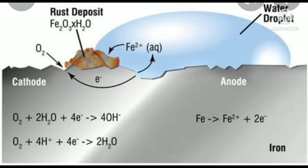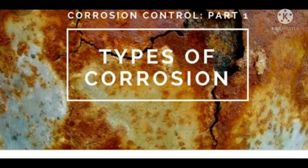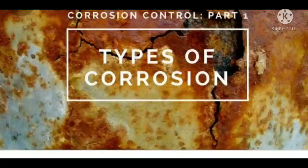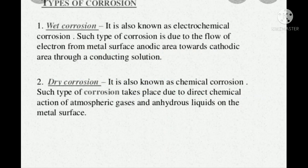Corrosion is the best example for an oxidation reaction. The chemical equation for rust formation is: 4Fe + 3O₂ + ... There are two types of corrosion. Dry corrosion means corrosion in the absence of moisture. Wet corrosion means corrosion in the presence of moisture — that is the key difference between the two.